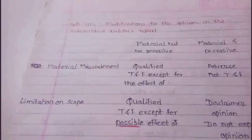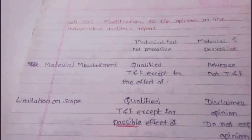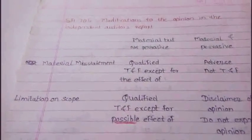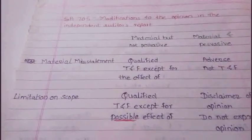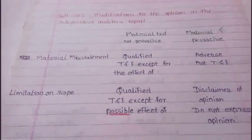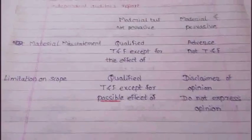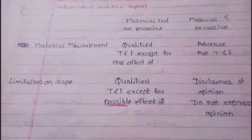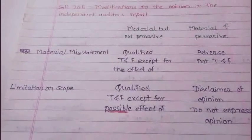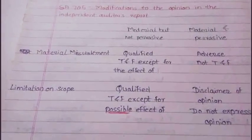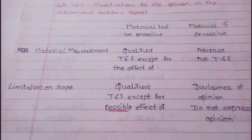So this was all about modifications to the opinion — qualified, adverse, and disclaimer of opinion. These are all modified opinions, as compared to the unmodified opinion covered in SA 700.